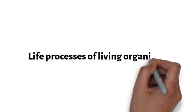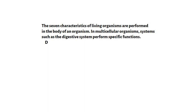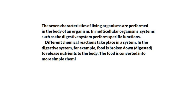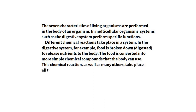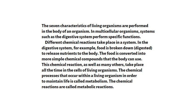Let us look at the life processes of living organisms. The seven characteristics of living organisms are performed in the body of an organism. In a multicellular organism, systems such as the digestive system perform specific functions. Different chemical reactions take place in a system — in the digestive system, for example, food is broken down or digested to release nutrients to the body, and the food is converted into more simple chemical compounds that the body can use. These chemical reactions take place all the time in the cells of living organisms. The chemical processes that occur within a living organism in order to maintain life are called metabolism, and the chemical reactions are called metabolic reactions.